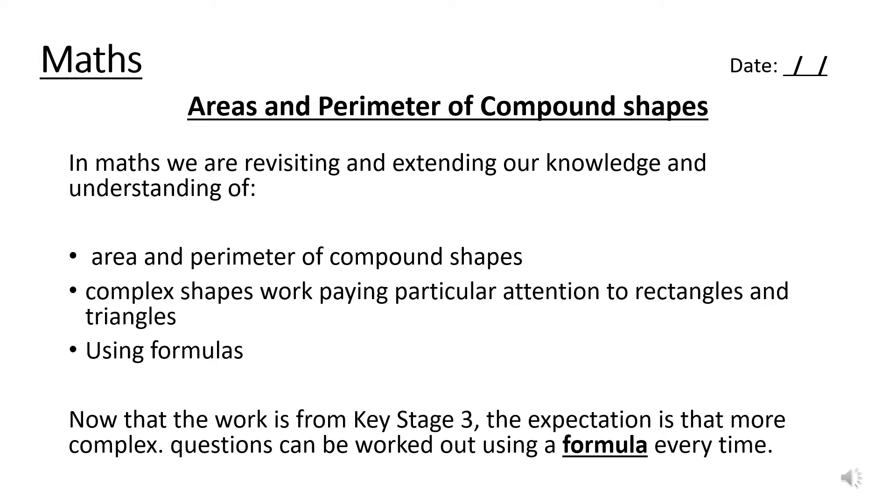Now in maths we are revisiting and extending our knowledge and understanding of a few things here. So you should know what an area is and what a perimeter is, but we will recap over some of these things. We're looking at area and perimeter of compound shapes, complex shapes work paying particular attention to rectangles and triangles. We're also introducing formulas. Now this is Key Stage 3 work, so the expectation is that more complex questions can be worked out using a formula every time. Remember, spread your work out and keep it clean.